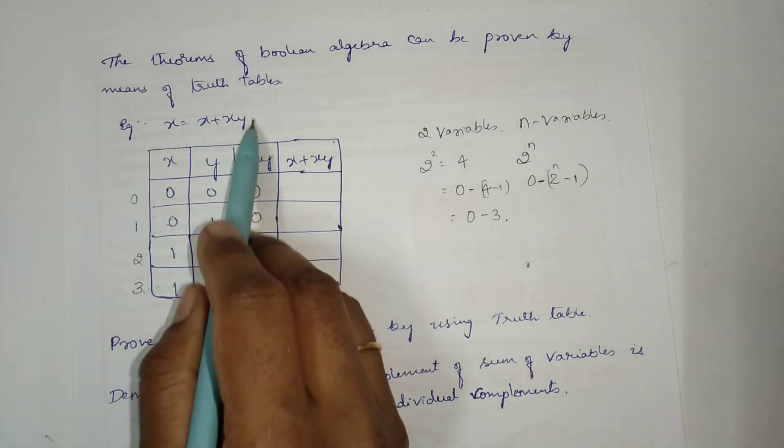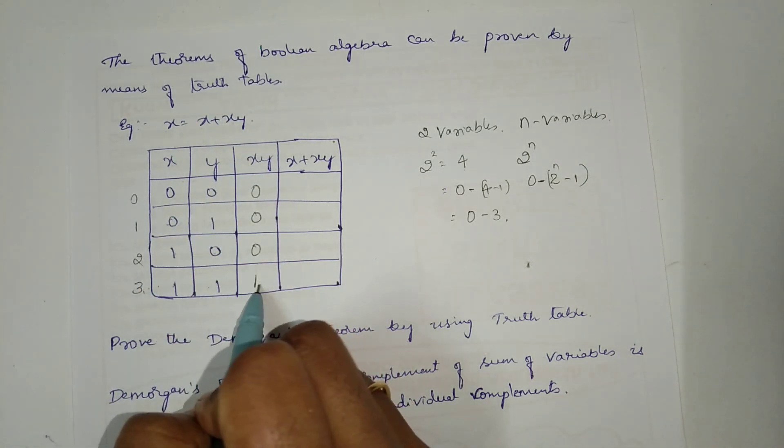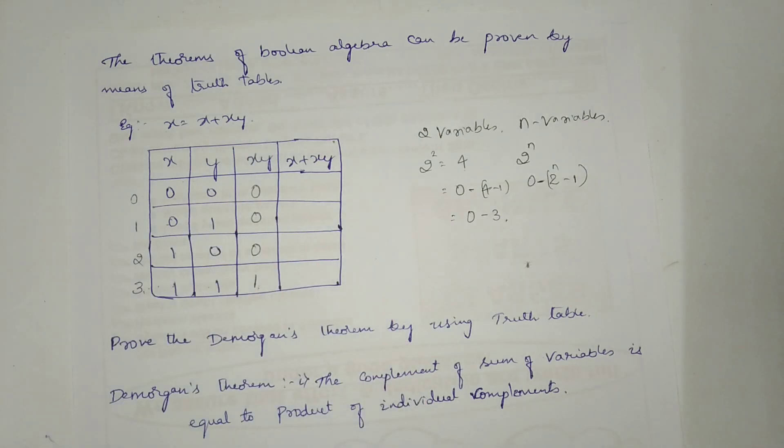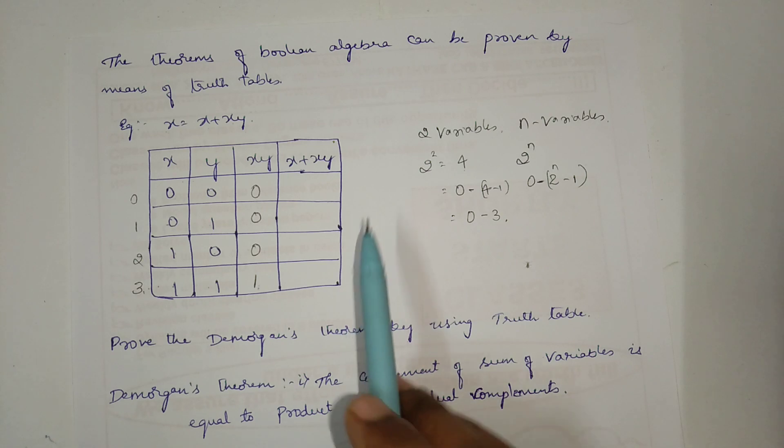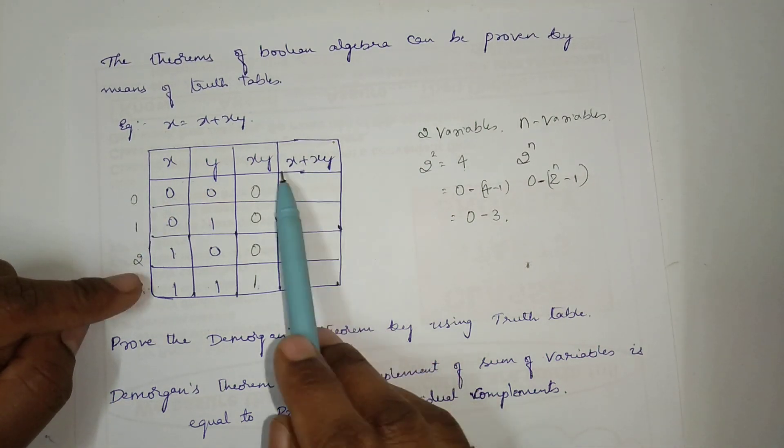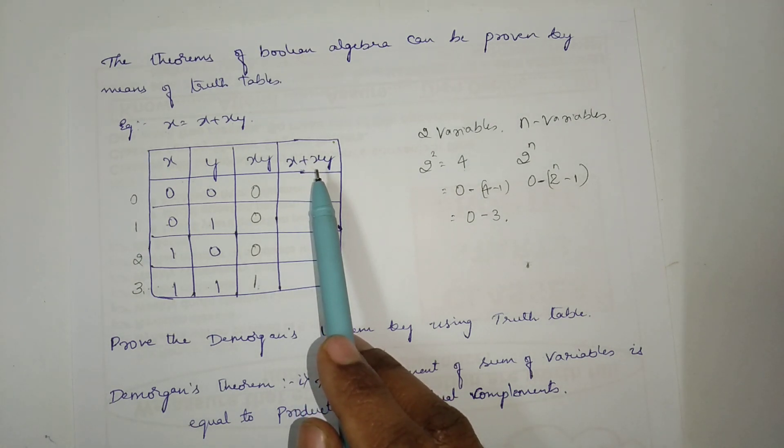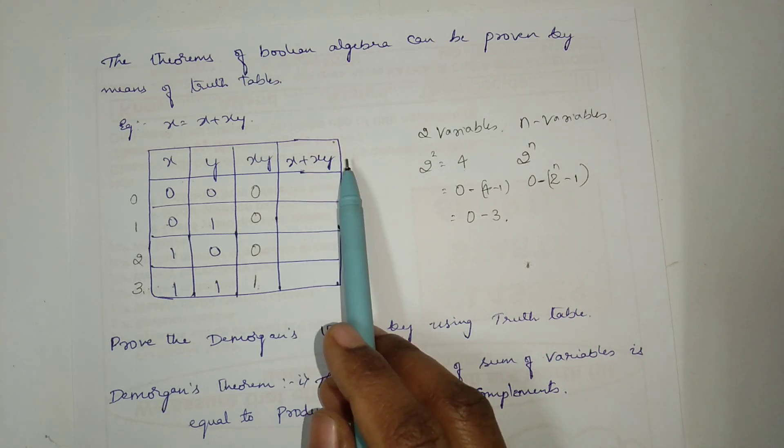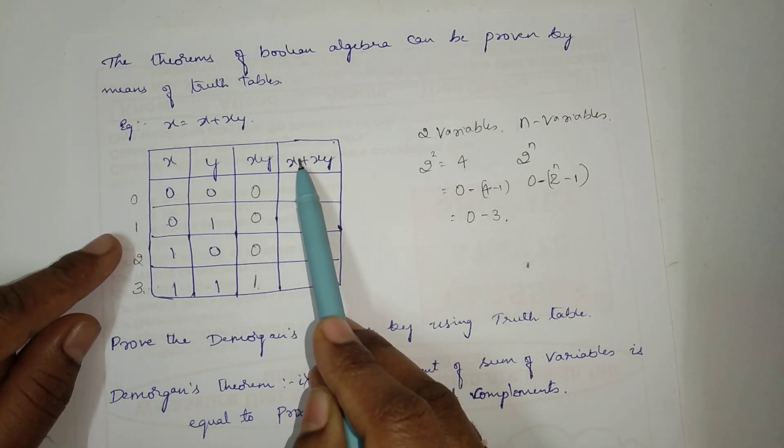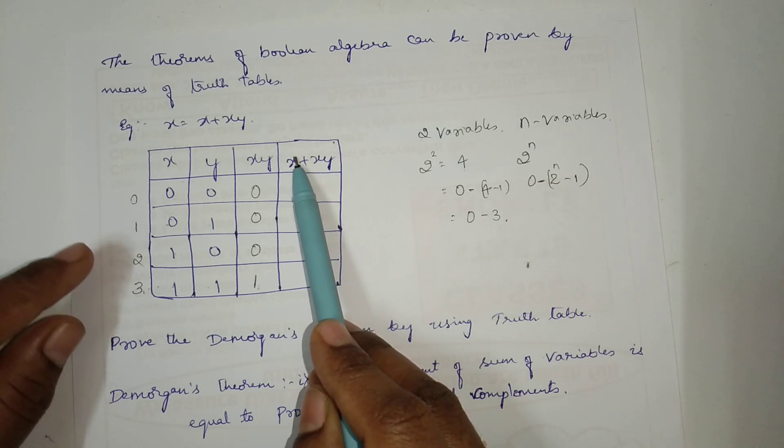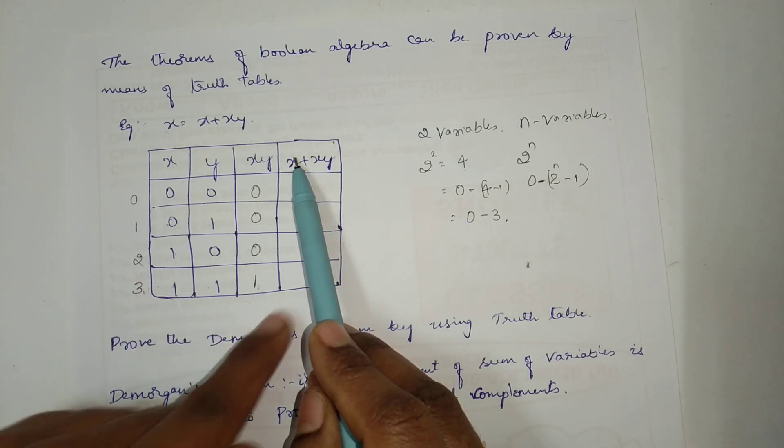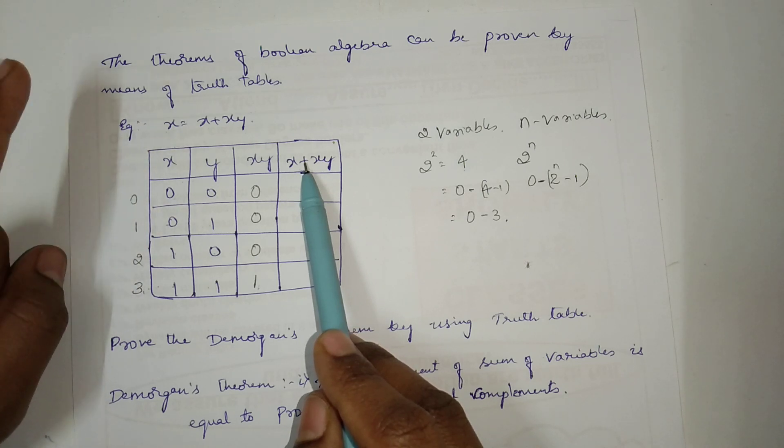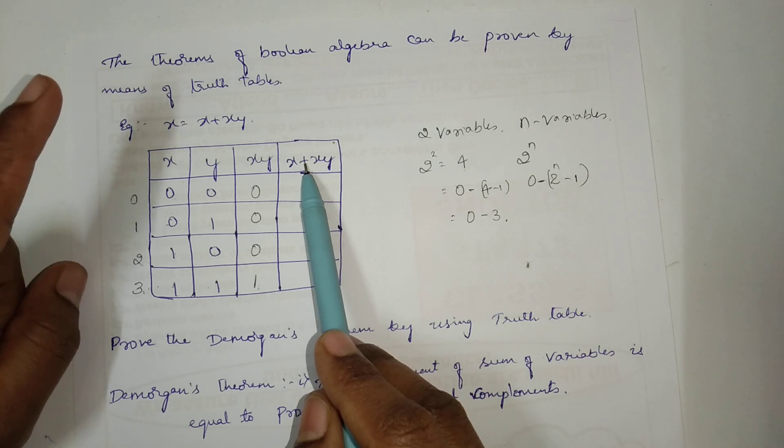Next, here, x plus xy is there. We have already solved or filled xy. Next, what I have to do? x OR with x into y. Next, for making x plus xy, plus is there. Plus means OR operation. What is the statement of OR operation? If any one input is 1, the output will be 1. So, what I will do? I have to check the column of x. If I find any ones, I can write the output as 1 directly here. Why? For an OR gate, if any one input is 1, if at least one input is 1, the output will be 1.